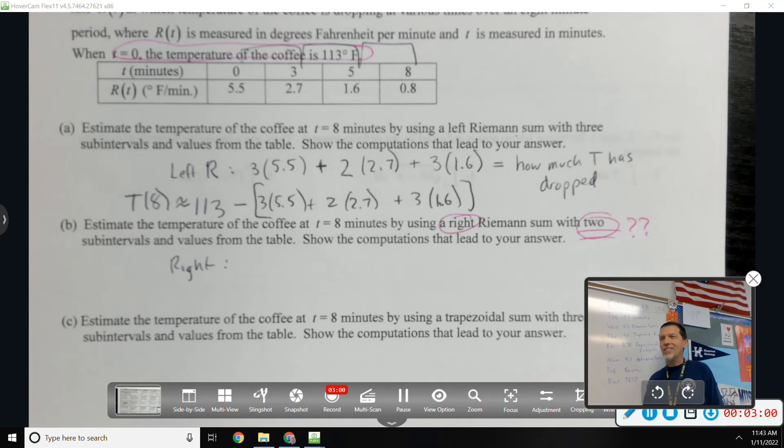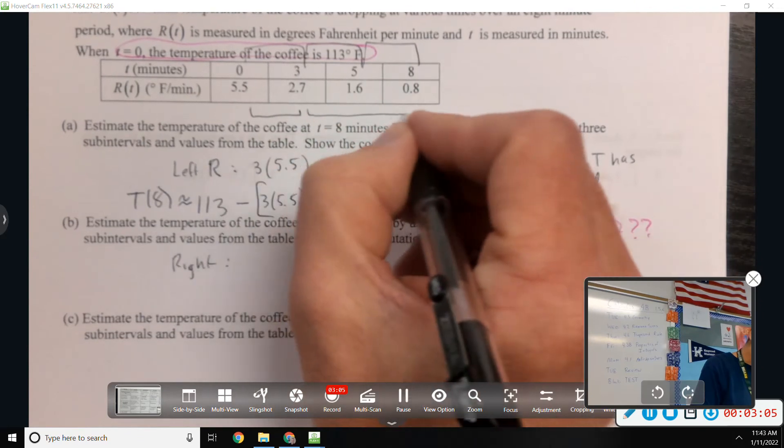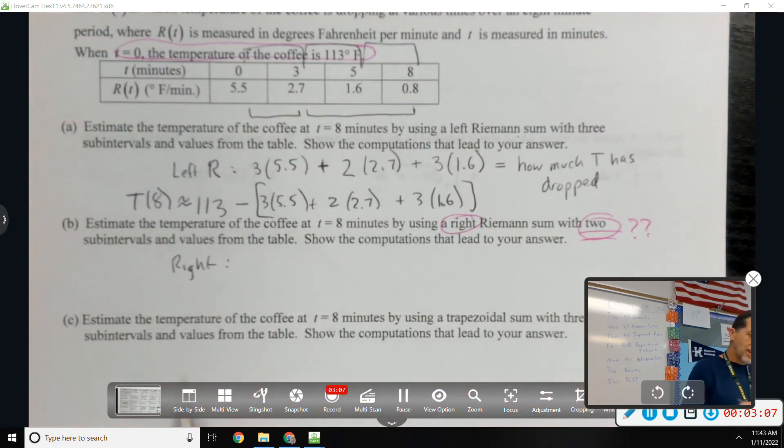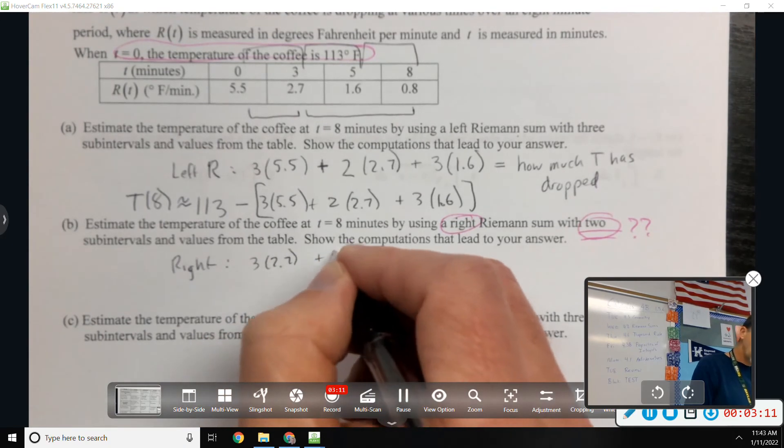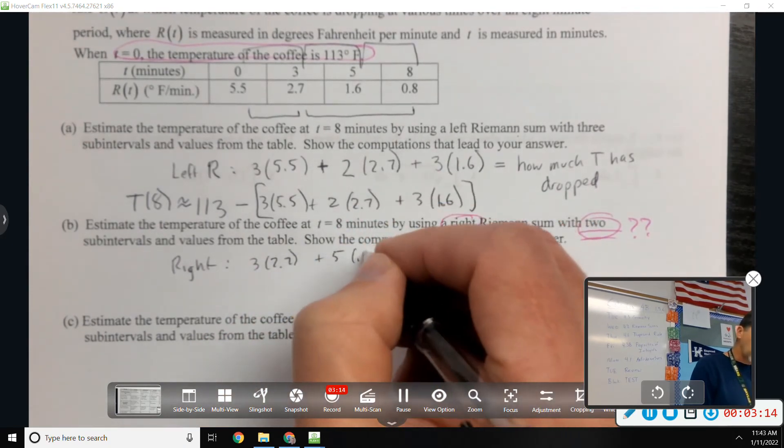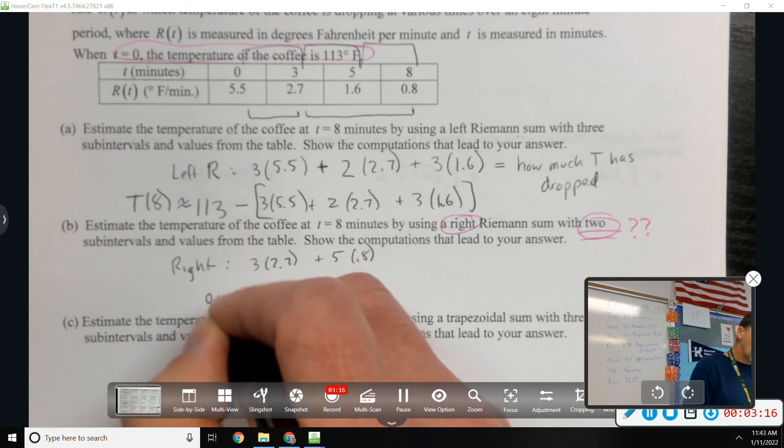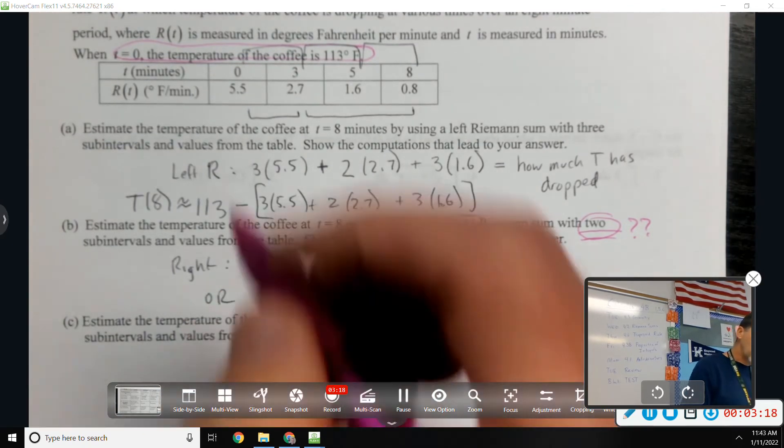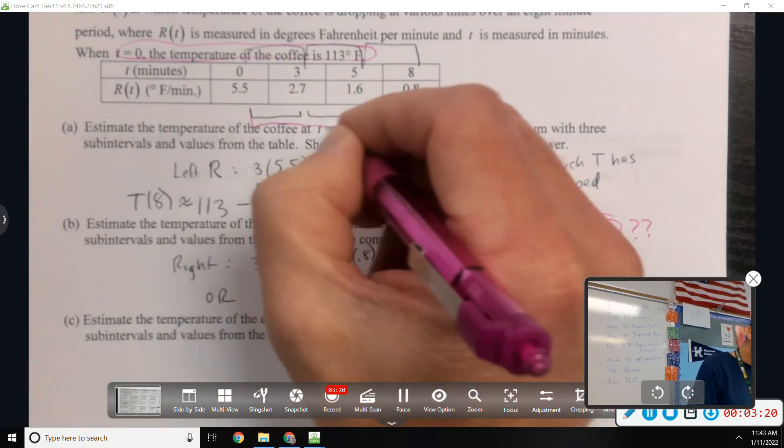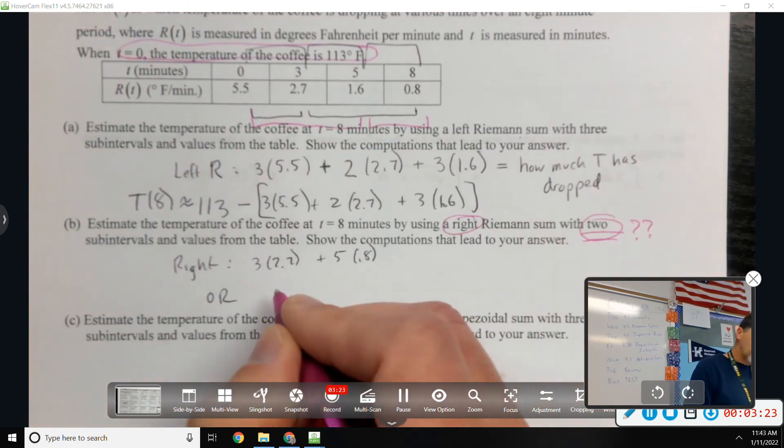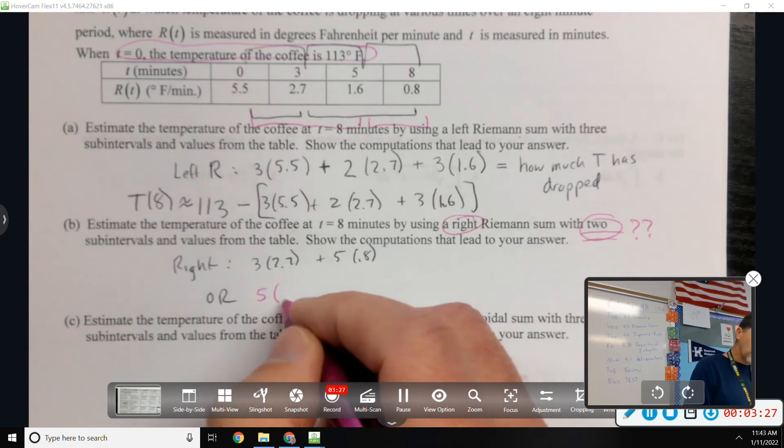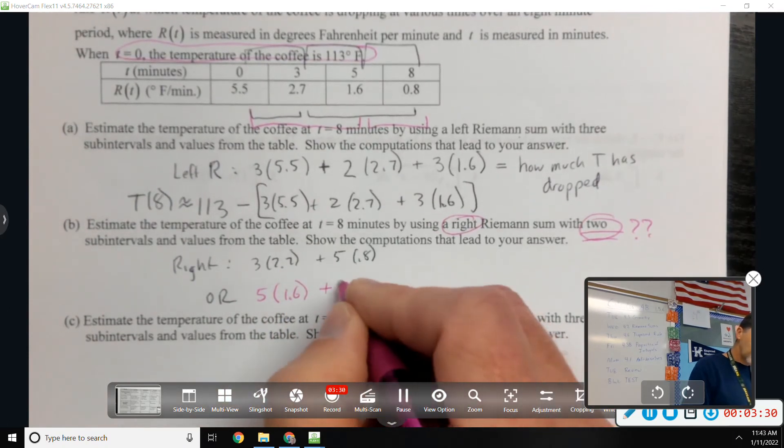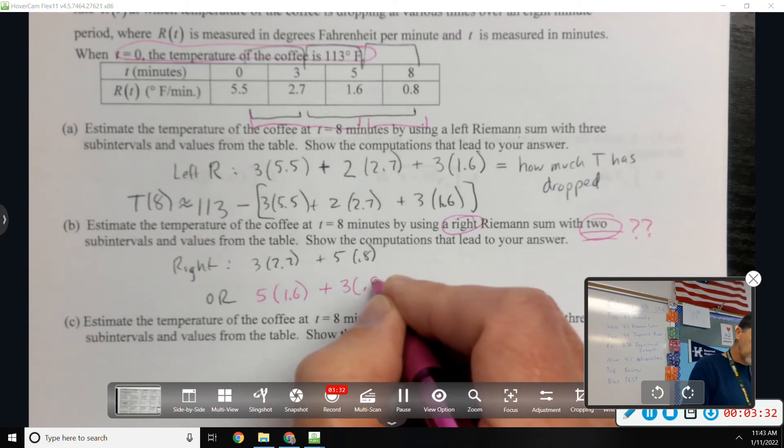So I would not ask this question because there's more than one right answer because you could either make your rectangles 0 to 3 and 3 to 8. So that would be 3 wide times 2.7 plus 5 wide times 0.8. Or you could make your rectangle 0 to 5 and 5 to 8.